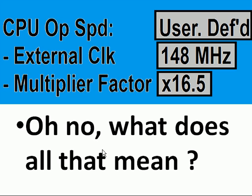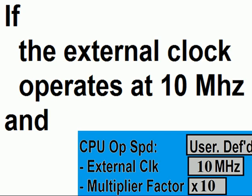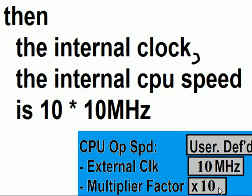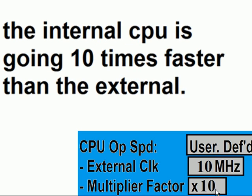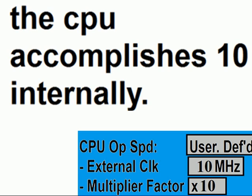I'm looking at the BIOS — what does all that mean? Let's use easy to understand but unrealistic numbers to grasp the essentials. If the external clock operates at 10 MHz and the multiplier is 10, then the internal clock — that is the internal CPU speed — will be 10 times 10 MHz, or 100 MHz. When the multiplier is 10, the internal CPU is going 10 times faster than the external. For every one instruction done externally, the CPU accomplishes 10 internally.